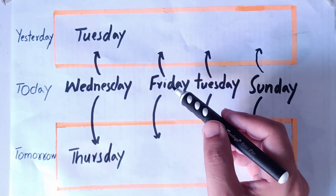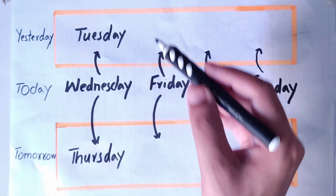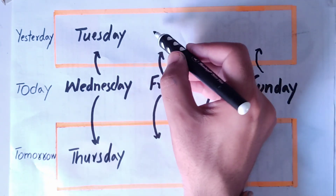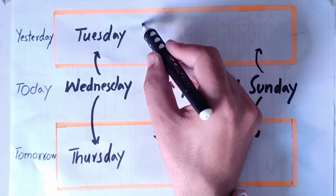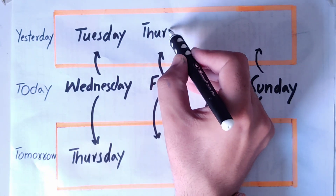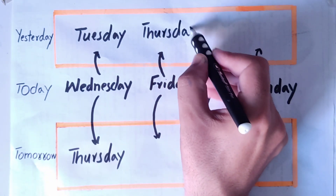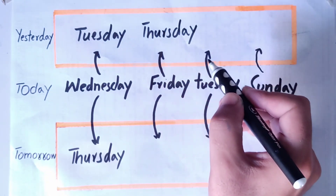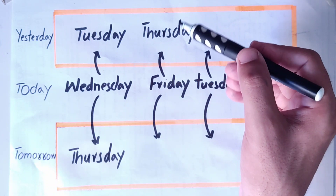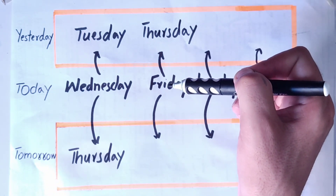And suppose today is Friday. So yesterday was Thursday. It's the days of the week — Thursday followed by Friday.